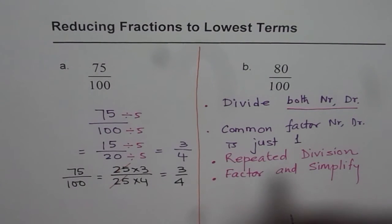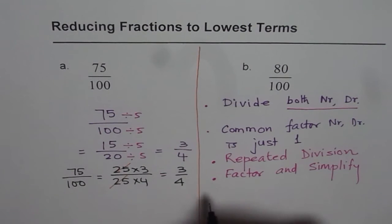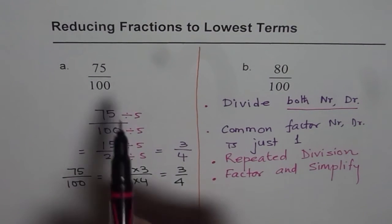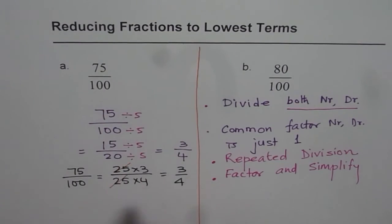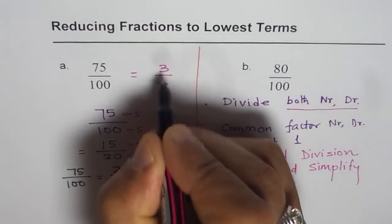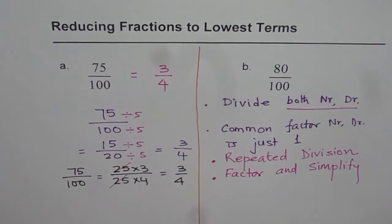Sometimes we also call this simplify fractions. In the whole process, what we did was we wrote 75 over 100 as 3 over 4. That's a much simpler term than 75 over 100.